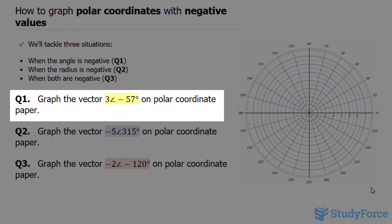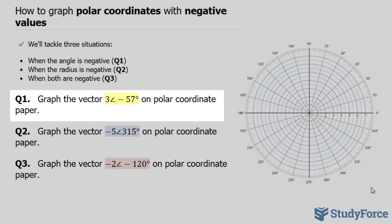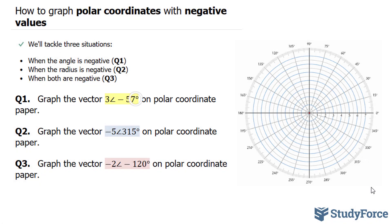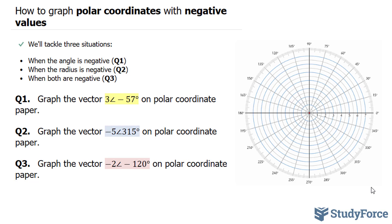Let's start with question one. In question one, they want us to graph the vector radius of three at an angle of negative 57 on polar coordinate paper. Notice that the angle here is negative. This means that we will be going clockwise as opposed to counterclockwise. If this were positive, we would go in this direction, but since it's negative, we'll be going in this direction.